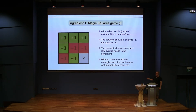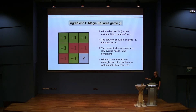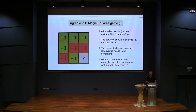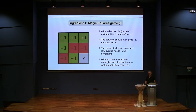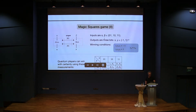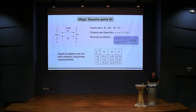The best thing they can do is come up with a joint strategy where they already decide what they will fill in. But since we cannot fill out this kind of magic square consistently satisfying all the conditions, there will be at least one point where their answers will not agree, or they won't satisfy the constraints on the rows or columns. So this is an example of a problem that cannot be solved classically with probability one. But it turns out that for quantum players there is a solution where they can win with probability one.